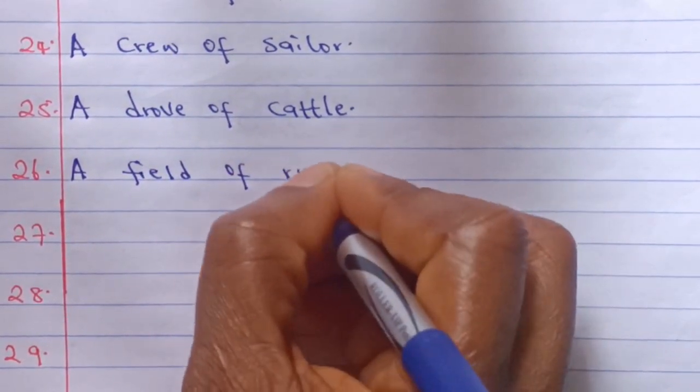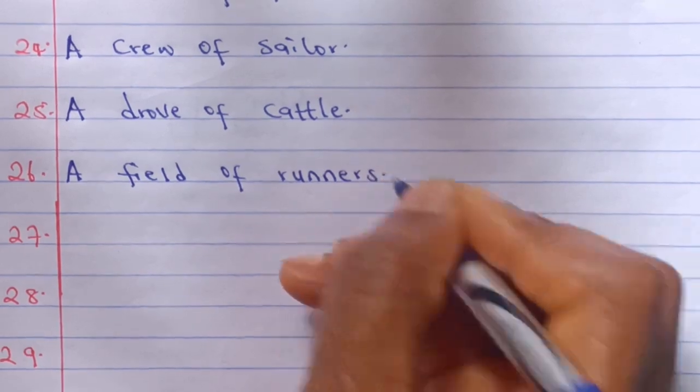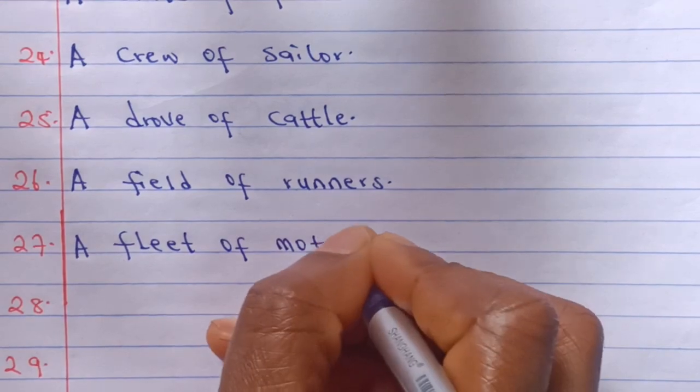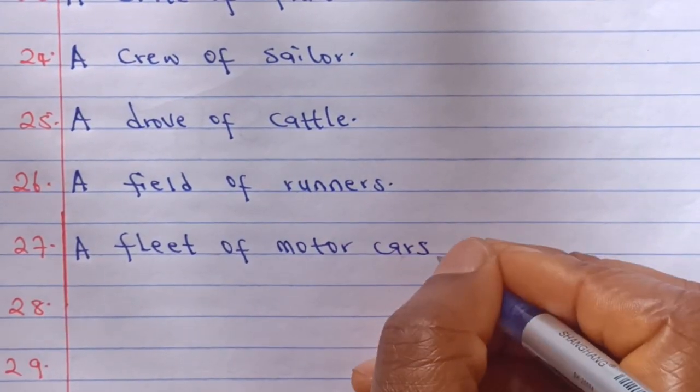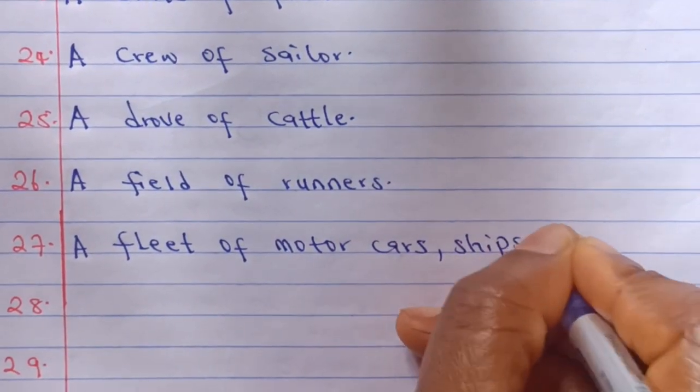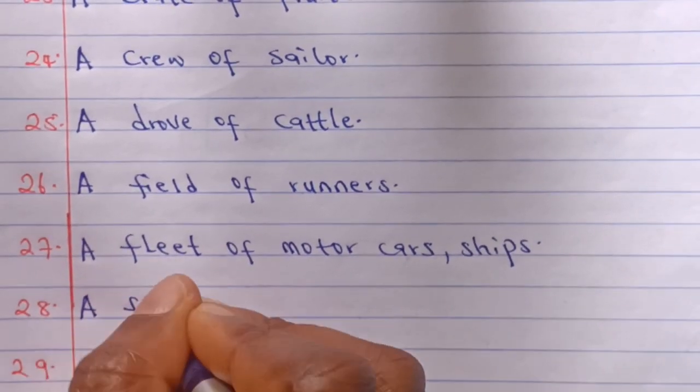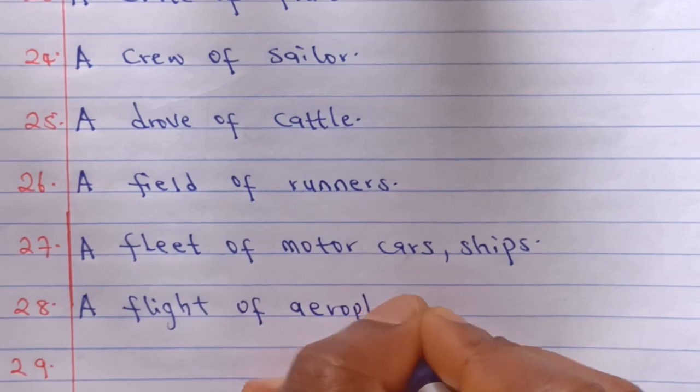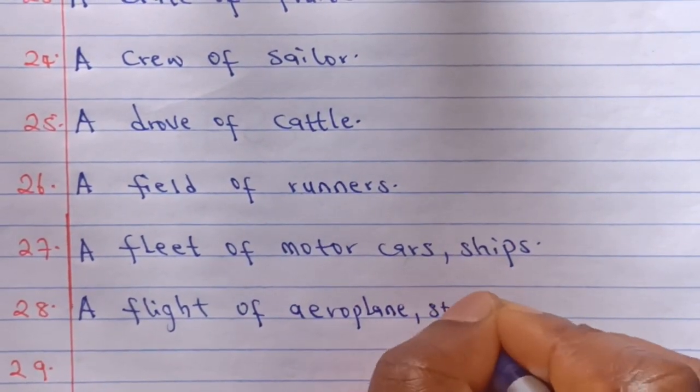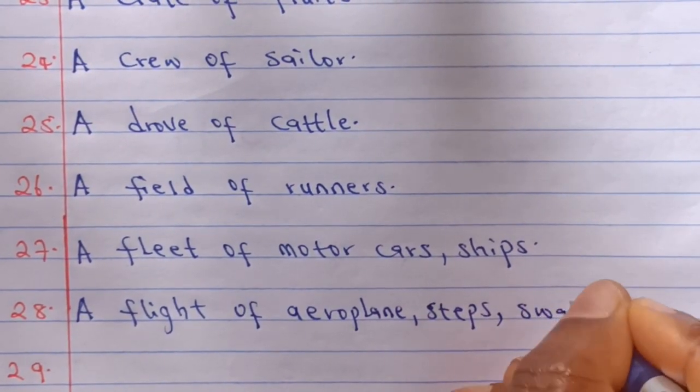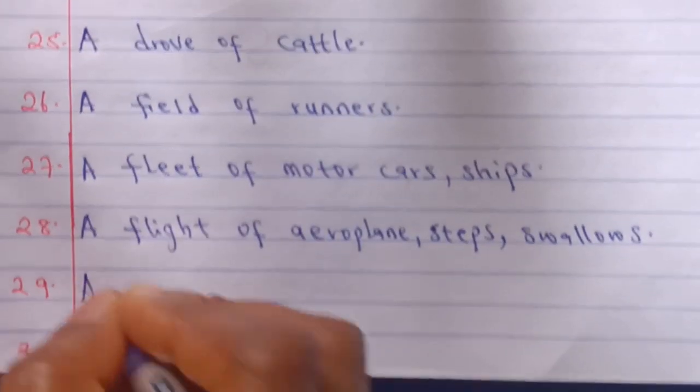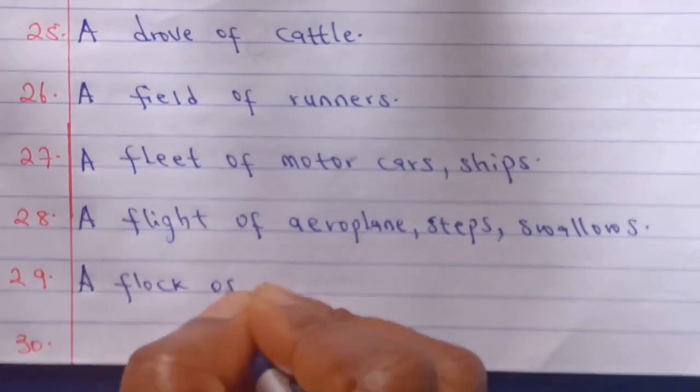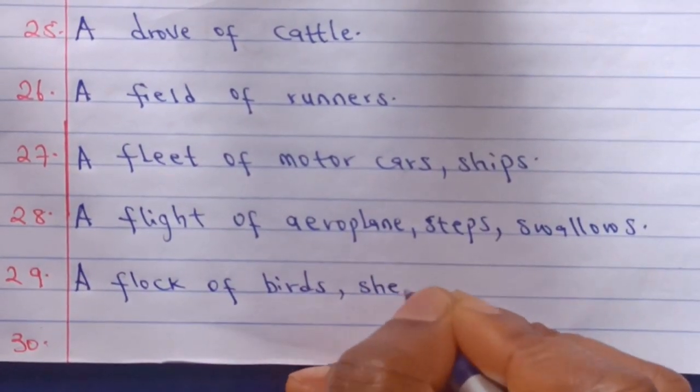a field of runners, a fleet of motor cars or ships, a flight of aeroplanes or steps or swallows, a flock of birds or sheep